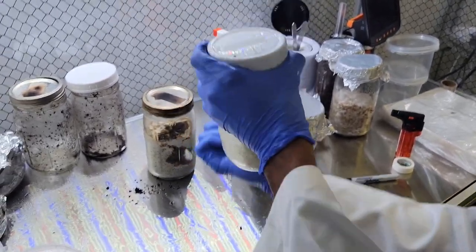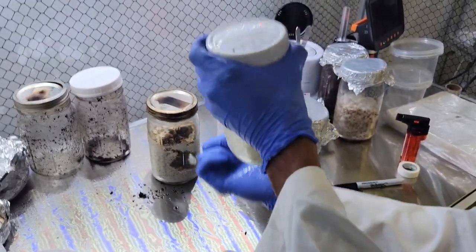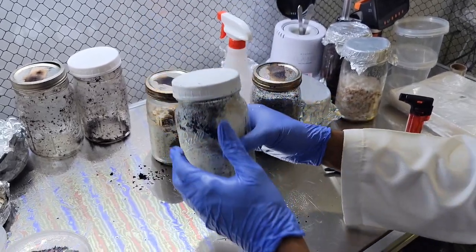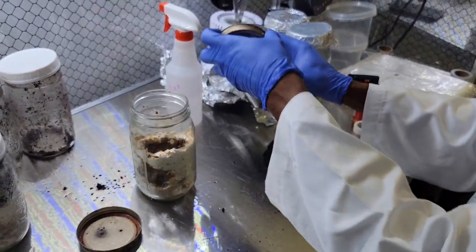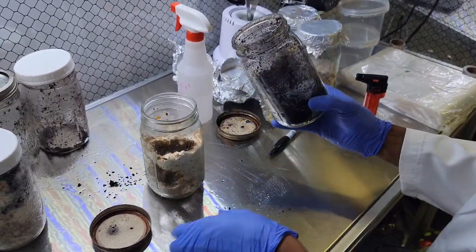I always want my substrate to be nice and flat, like a nice flat surface. You can tap the bottom of the jar and that will flatten any of the substrate in there.